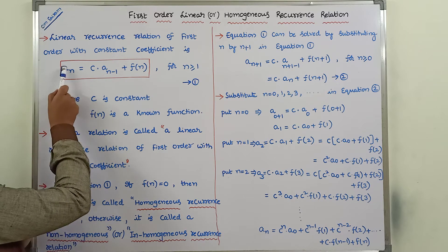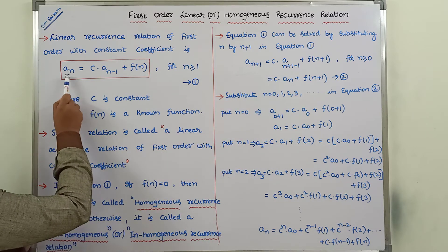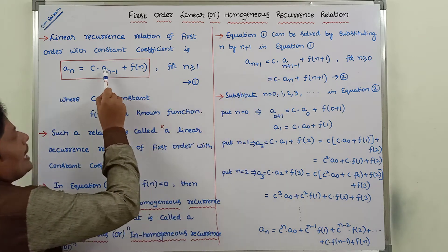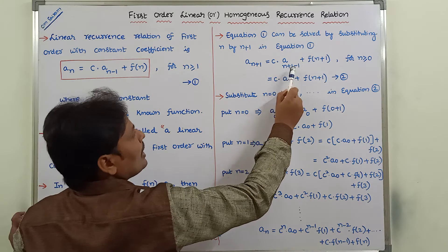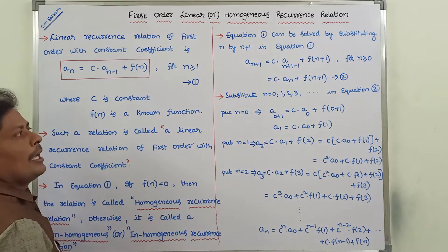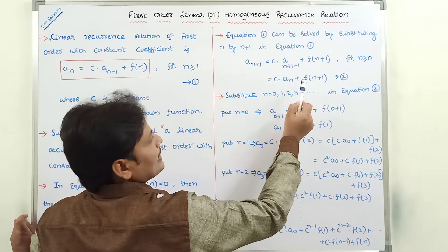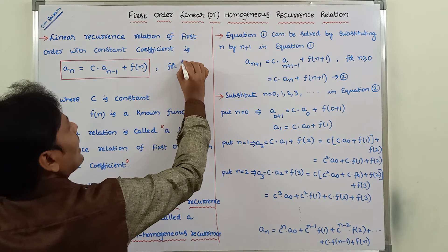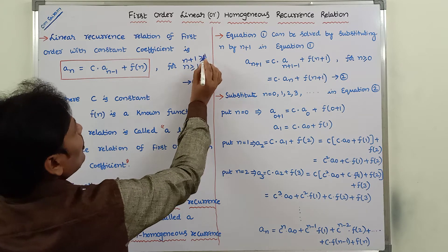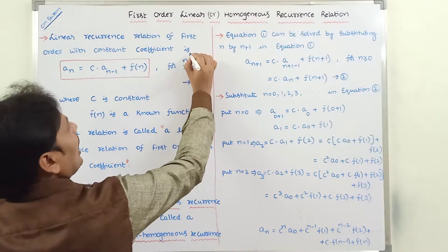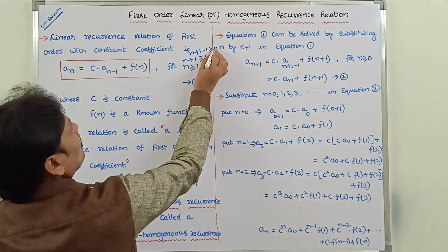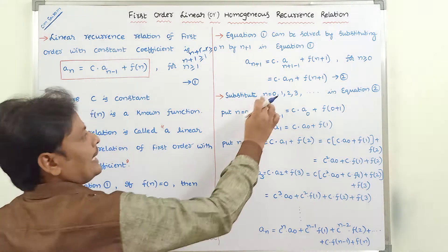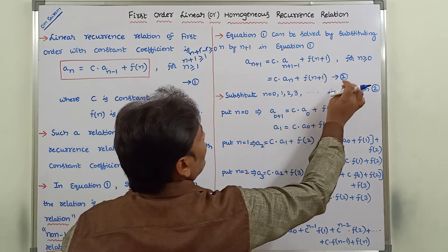So a_n is replaced by a_{n+1}. We get: a_{n+1} = c · a_{n+1−1} + f(n+1), and since (n+1−1) = n, this simplifies to a_{n+1} = c · a_n + f(n+1), for n ≥ 0. This is equation 2.